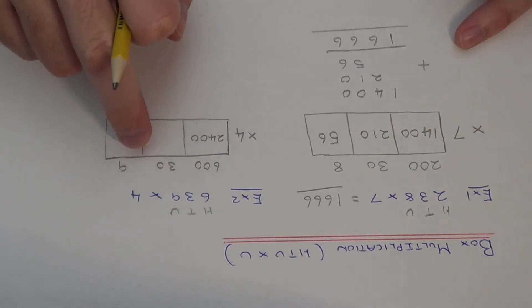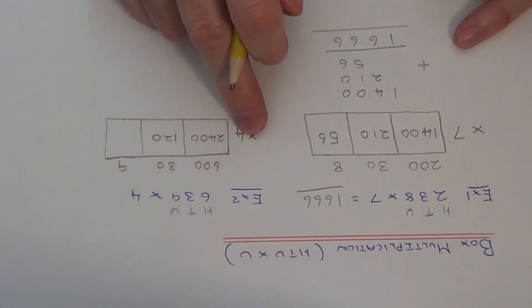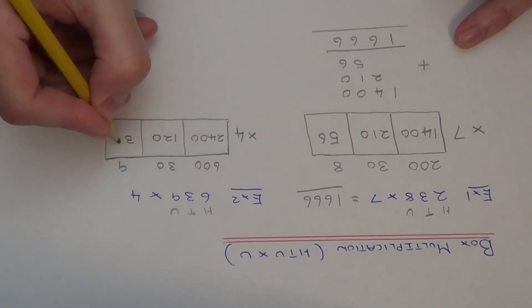In our next box we've got 30 times 4, so again just work out 3 times 4, that's 12 plus 0, and our final box we've got 9 times 4 which is 36.